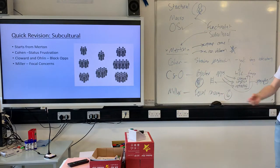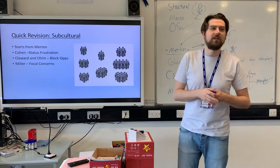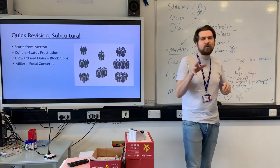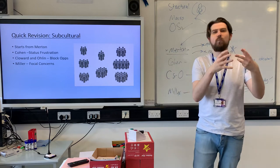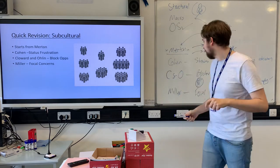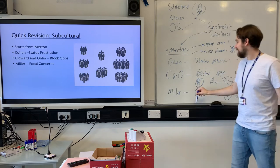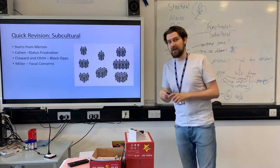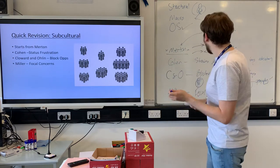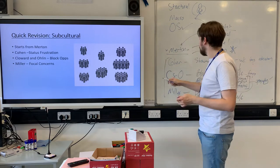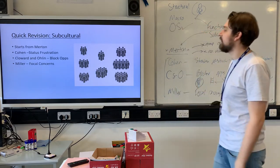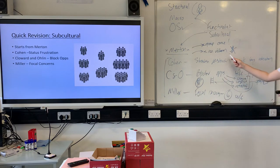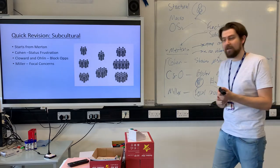Miller's idea is that working class lads have these different focal concerns - they like going out drinking, taking drugs, sleeping with as many women as they can, getting in trouble with bouncers, having a scrap. That's what they want to do, and that's why it's inevitable that they'll commit crime. A big weakness of this is - is this just a working class thing, or is this just a stereotype? Do you see a lot of this in middle class rugby teams on their night out? So we've got three functionalist subcultural writers who now provide explanations for non-utilitarian crime, which the conflict group and focal concerns are examples of.